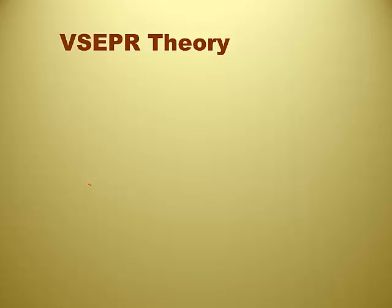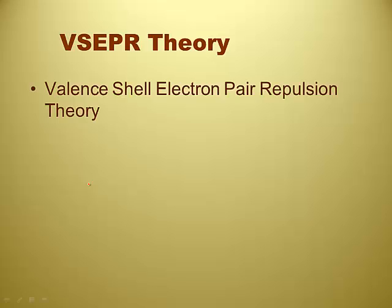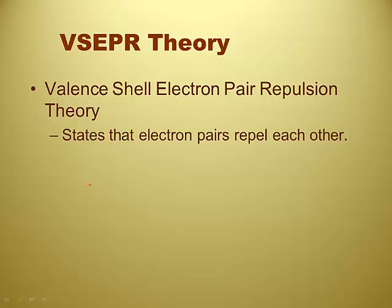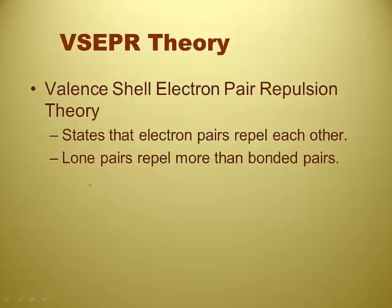Valence shell electron pair repulsion theory. And we pronounce that VSEPR. Valence shell electron pair repulsion. Basically it states that electron pairs repel each other. Valence shell electron pairs repulsion, they repel. It basically states also that lone pairs repel more than bonded pairs. So lone pairs on the central atom require more room than bonded and they smoosh bonded.